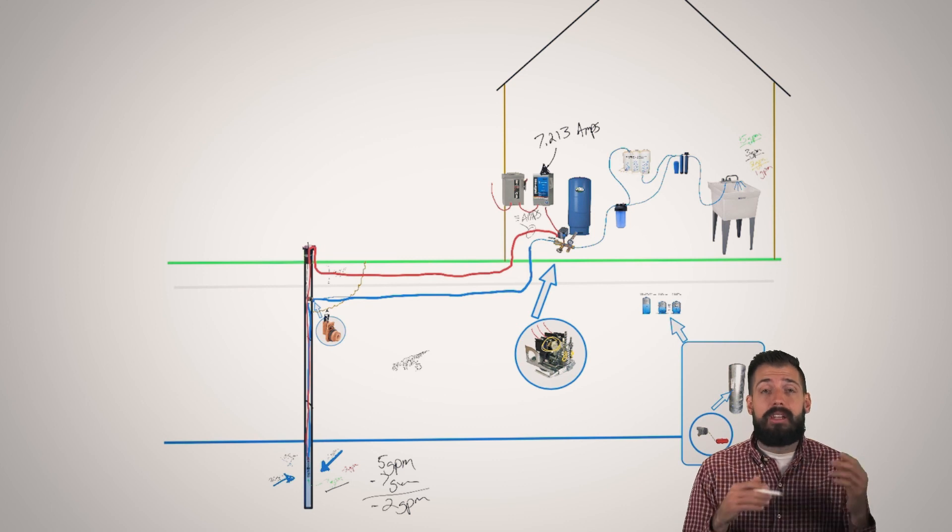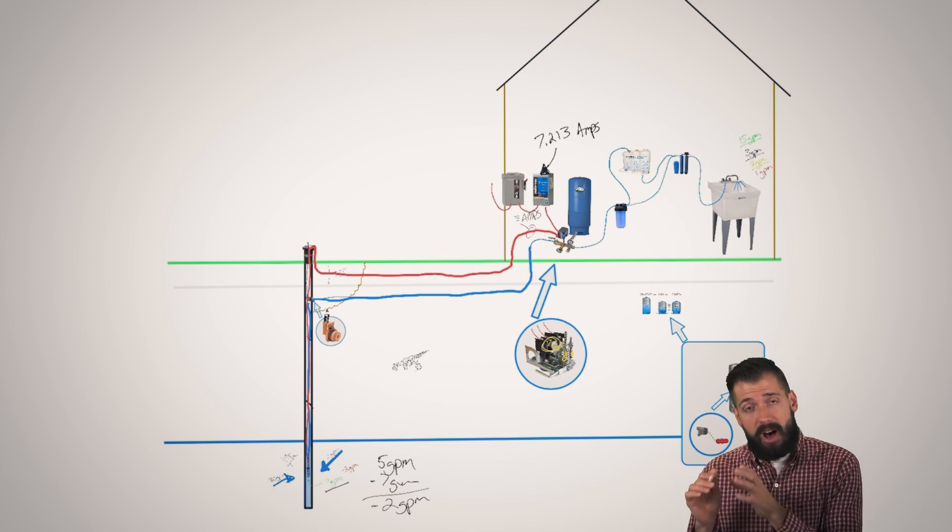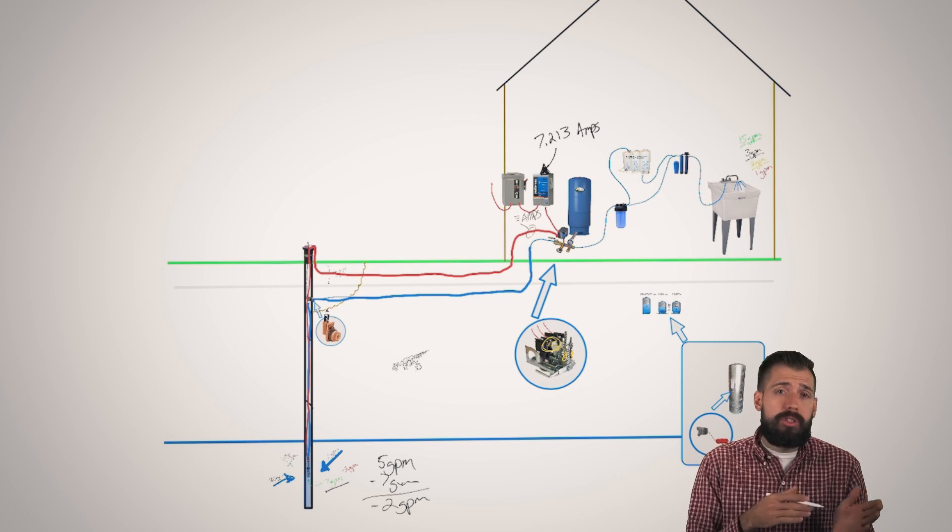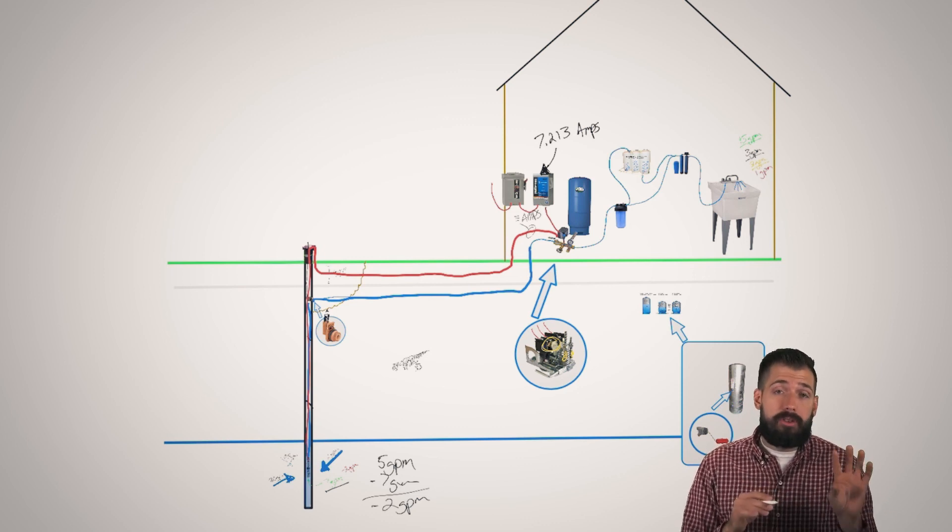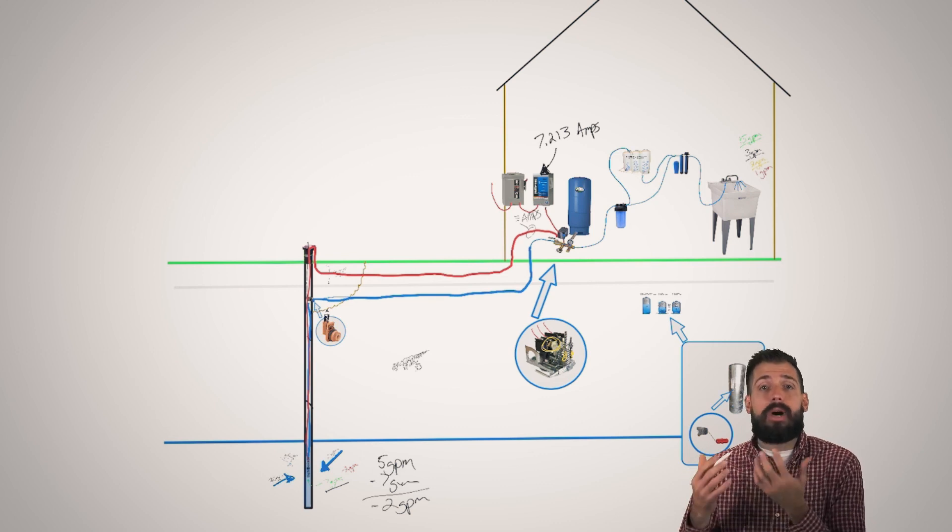And again, I want that practical, not theoretical. I want to practically know that this well is able to at my faucet, give me this amount of water versus theoretically it could produce 20 gallons per minute. That's great in theory. But what I want is the practical application of how much water do I actually get?